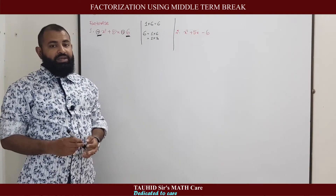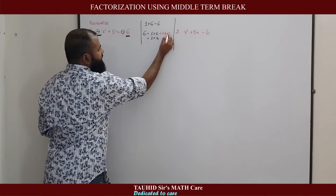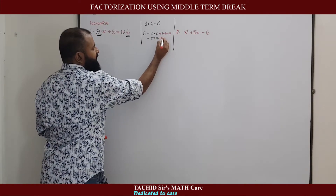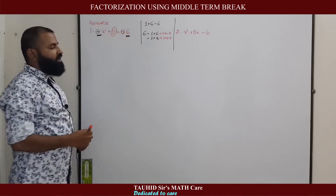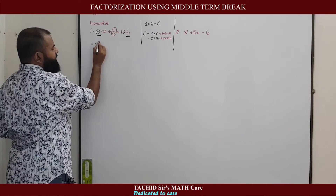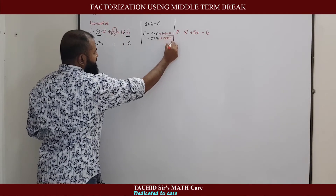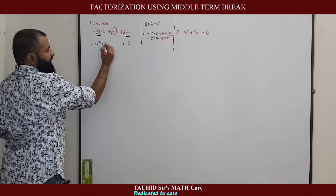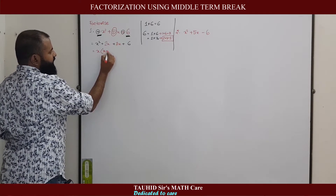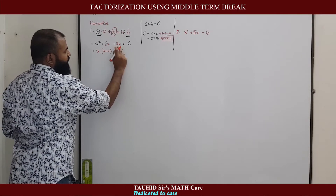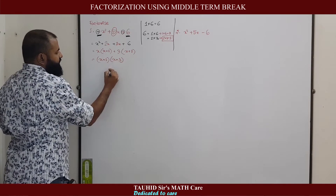We check which pair's addition equals the middle term. If we add 1 and 6 we get 7, which is not equal to 5. If we add 2 and 3 we get 5, which matches. So in the second line the first term and third term remain unchanged, and we write the middle term 5x as 2x + 3x. Taking x as a common factor gives x(x + 2), and taking 3 as a common factor gives 3(x + 2). Finally: (x + 2)(x + 3). This is the answer to question number 1.